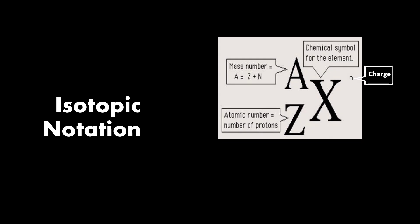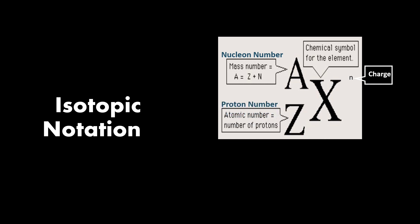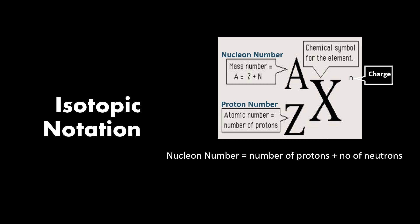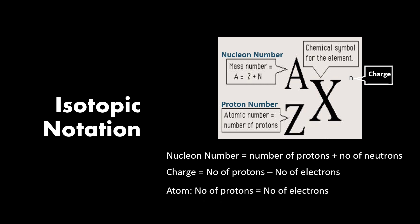This is the usual representation of an isotopic notation. It consists of capital letter X for the chemical symbol of the element, capital letter A for the mass number or nucleon number, and capital letter Z for the atomic number or proton number. A lowercase N is used to write the charge of the element. The nucleon number equals the sum of the number of protons and neutrons in the nucleus. The charge is calculated by subtracting the number of electrons from the total number of protons. The element is an atom if the number of protons equals the number of electrons, and it is an ion if they are not equal.